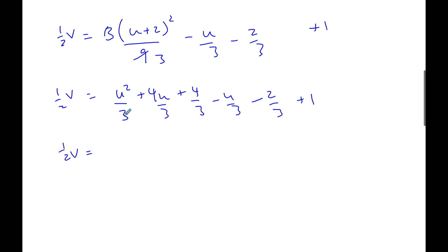And so if I collect like terms, I know I have u squared, this and this is 4 thirds minus 1 third is 3 thirds. So that is plus u, 3 thirds is 1. 4 thirds subtract 2 thirds is 2 thirds.